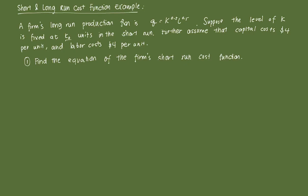Hi everyone. In this video, we're going to deal with an actual mathematical example of short-run and long-run costs. Suppose a firm has a long-run production function given as Q = K^0.5 * L^0.5. Suppose that in the short-run, capital is fixed at some level K0, meaning the firm has no control over the level of capital. And let's further assume that both the wage rate and the rental rate of capital per hour is $4.